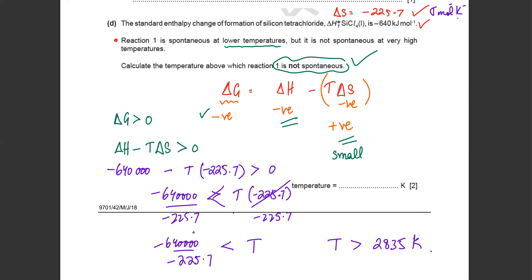T comes out to be greater than 2835 Kelvin. Be very careful that the inequality sign changes if you divide or multiply by a negative value. The reason is that 5 is greater than 3, but if you multiply by a negative value, minus 3 becomes the bigger value — always remember the inequality switches.